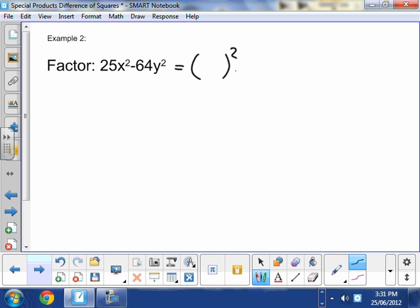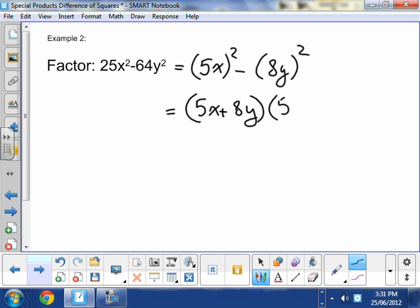I think that the first term should be 5x. I'll write the whole thing to the power of 2. And the second term is 8y. And the whole thing to the power of 2. So now what I have is 5x plus 8y. Yes. And in the second bracket, 5x minus 8y. All right. Good. So more practice for you from the textbook.